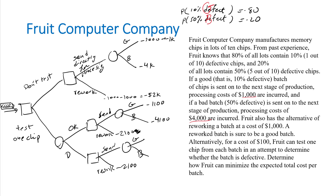Now let's identify the probabilities. Probability of having a good batch is given: 80%. Probability of having a bad batch is given: 20%. The problem states lots contain 1 out of 10 defective chips for good batches, so probability of defective given a good batch is 10%, and probability of defective given a bad batch is 50%.